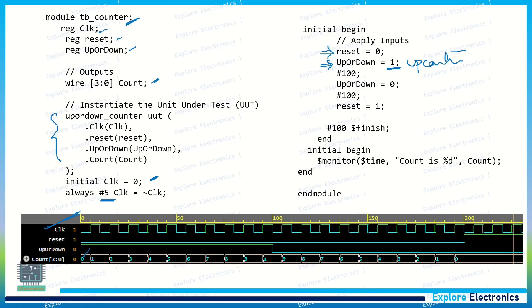So you can see initially 0, 1, 2, 3, 4, 5, 6, 7, it is counting, and this value will be up to 100 time units. You can see here after 100 time units what I am doing: up or down I am making it as 0. Then here you can see up or down will be going to 0, and from here onwards, the value of count is A (10 in decimal). It will count down from 10 to 9, then 8, then 7, then 6, 5, up to 0.